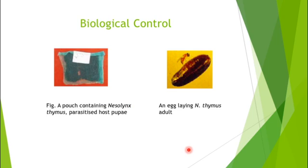The next is biological control. It is done by releasing Nyzolinkus thymus inside the rearing house on the second day of the fifth instar. Nyzolinkus thymus is a pupal parasitoid of the Uzi fly. A parasitoid is an organism that ultimately kills its host. This picture shows a pouch containing Nyzolinkus thymus, and this is an egg-laying Nyzolinkus thymus adult.